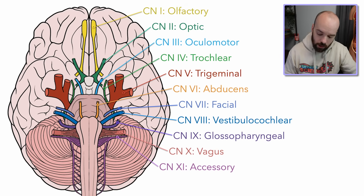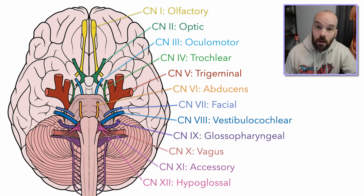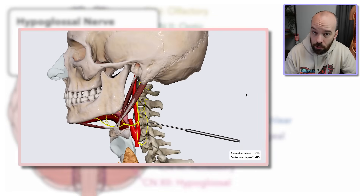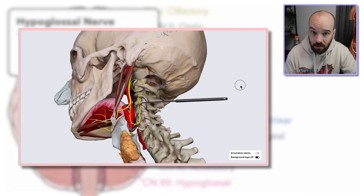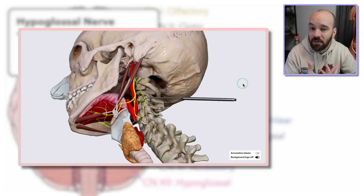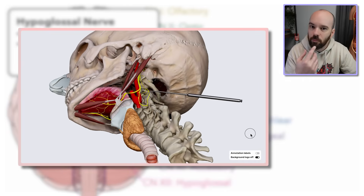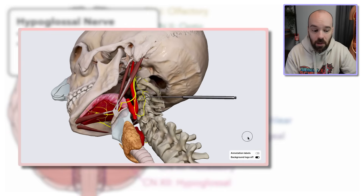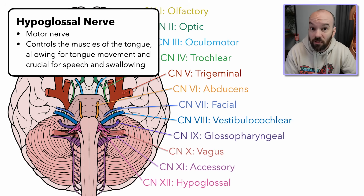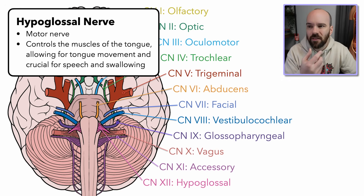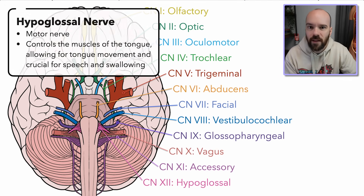Finally, we have our twelfth cranial nerve — the hypoglossal nerve. The hypoglossal nerve is a motor nerve controlling most of the movements of the tongue. Your tongue is a muscle, and there are also muscles connected to it. Hypo means under, glosso means tongue — so this nerve is literally the nerve under the tongue, because that's where many of those tongue-moving muscles are attached.